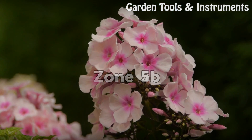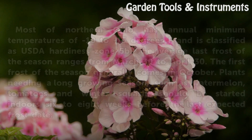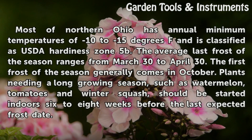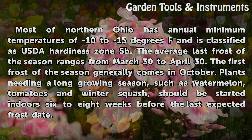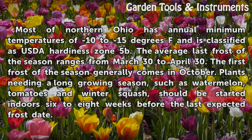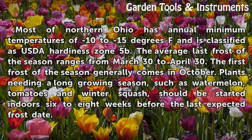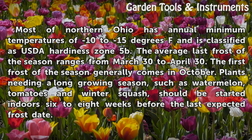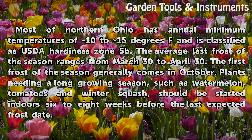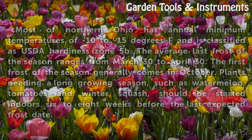Zone 5B. Most of northern Ohio has annual minimum temperatures of 10 to 15 degrees Fahrenheit and is classified as USDA hardiness Zone 5B. The average last frost of the season ranges from March 30 to April 30. The first frost of the season generally comes in October. Plants needing a long growing season, such as watermelon, tomatoes and winter squash, should be started indoors 6 to 8 weeks before the last expected frost date.